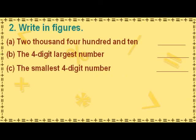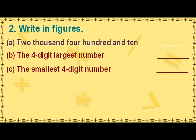Write in figures. The number for this number name will be written as the digit 2 in the thousands place, the digit 4 in the hundreds place, the digit 1 in the tens place, and the digit 0 in the ones place.